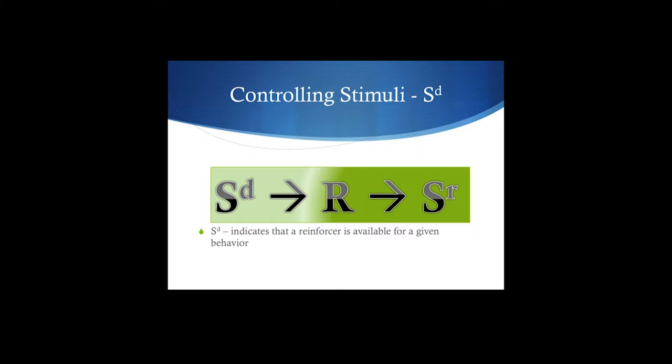It's the stimulus that signals that a reinforcer is available for a particular response. And that stimulus changes. That stimulus can signal that one behavior is going to get reinforced, it can signal that a different behavior is going to get reinforced, it can signal about what types of reinforcers are available. It can do all sorts of things. But just remember that it's just a signal. It just tells you what's going to get reinforced.